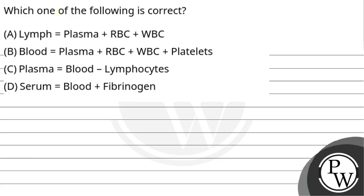Hello Bacho, let's see the question: which one of the following is correct? Option A: Lymph equals plasma plus RBC plus WBC. Option B: Blood equals plasma plus RBC plus WBC plus platelets. Option C: Plasma equals blood minus lymphocytes. Option D: Serum equals blood plus fibrinogen.